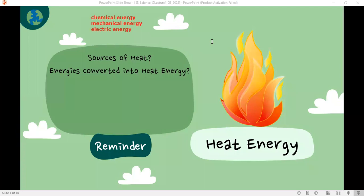The sun, for example, converts chemical energy into heat energy. But when you rub your hands, you are actually turning mechanical energy into heat energy. When you use an iron cloth or a kettle, for example, electric energy is being converted into heat energy.